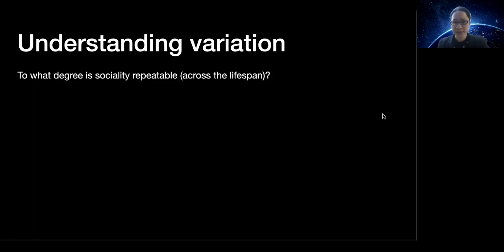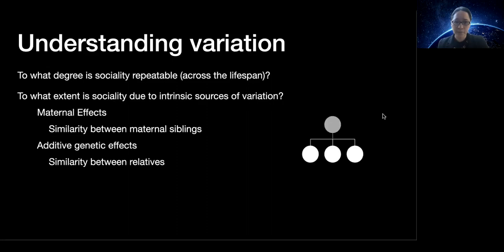A first step in this journey is understanding how consistent or repeatable individuals are in their behavior. This can be in the short term, such as over the course of one field season, but also in the long term with repeat sampling over the course of the lifespan. Can we discern the extent to which repeatability in behavior is due to intrinsic causes such as maternal effects or additive genetic sources of variation?